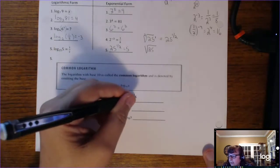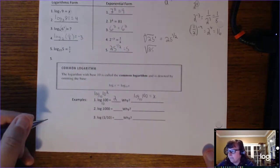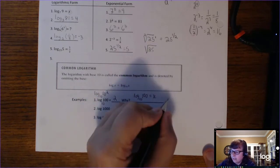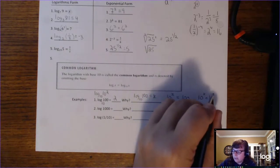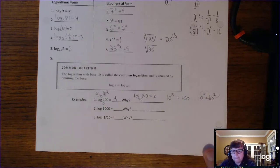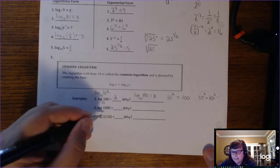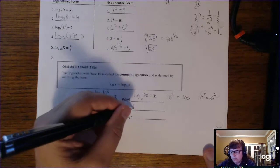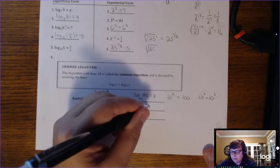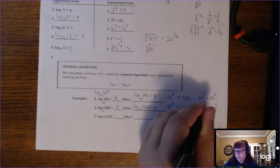To prove it: log base 10 of 100 equals x. Rewrite in exponential form: 10 to the x equals 100, and 100 is 10 squared, so x is 2. The log of 1,000 would similarly be 3, since 1,000 is 10 cubed. Log base 10 of 1,000 equals x means 10 to the x equals 1,000, and since 1,000 is 10 to the third, x must be 3.